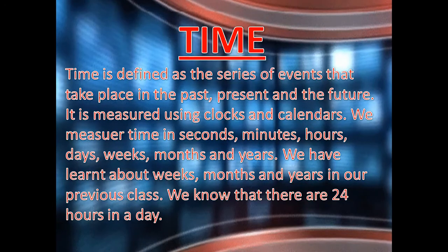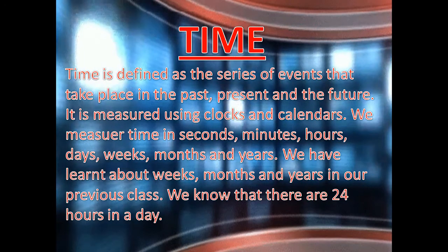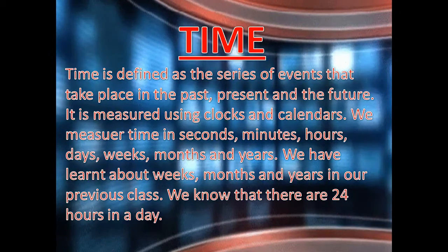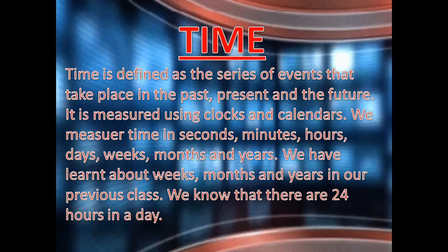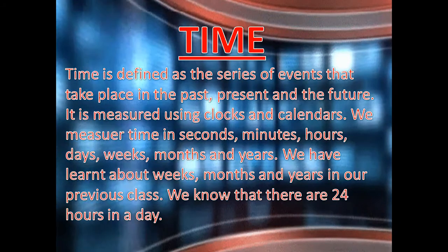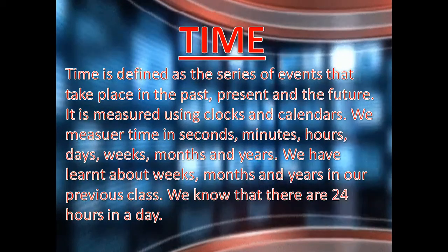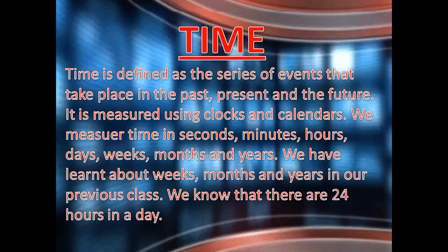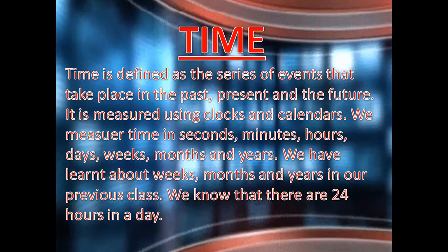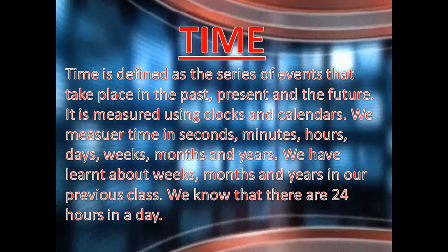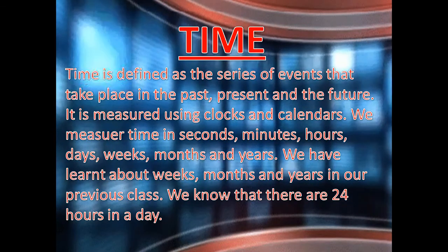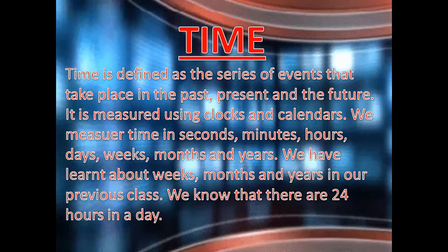We know that there are 24 hours in a day. So, children, time is defined as a series of events that take place in the past — which is over — which is happening, and which will happen. It is measured using a clock and calendar. In class 2 you have learnt that one day has 24 hours.